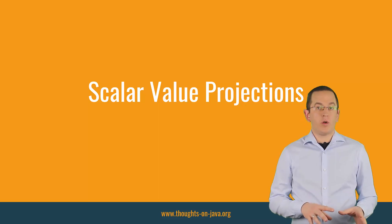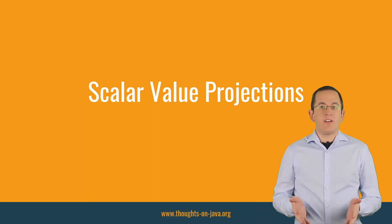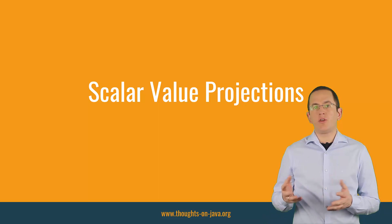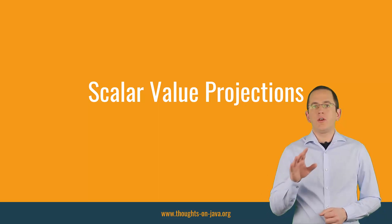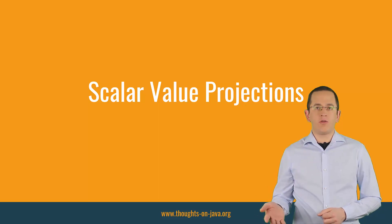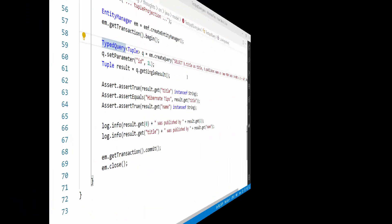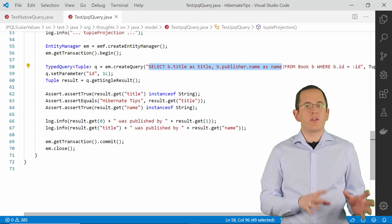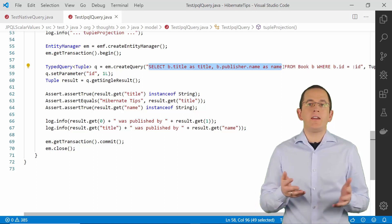Scalar value projections are my least favorite ones. In almost all situations, I prefer DTO projections. Scalar value projections can be a good option if you need to read and immediately process one to five database columns for which you don't have a matching DTO. The main downside is that they are very uncomfortable to use — your query returns an object array, and you need to remember the position of each column and cast the array element to the correct type. You can use this projection with a JPQL, Criteria, or native SQL query.